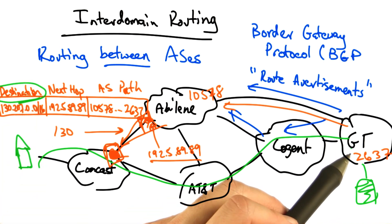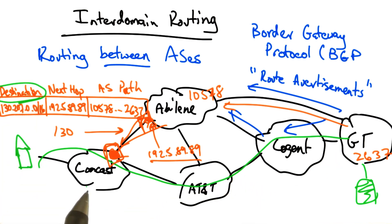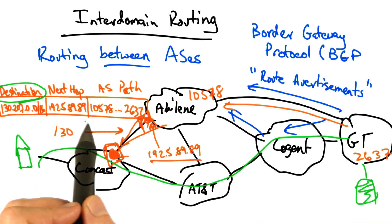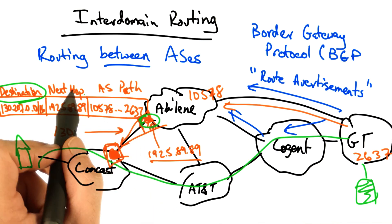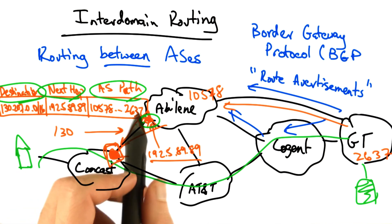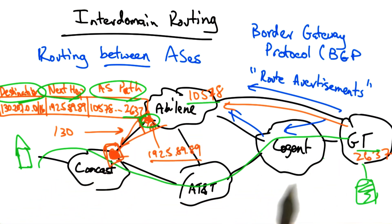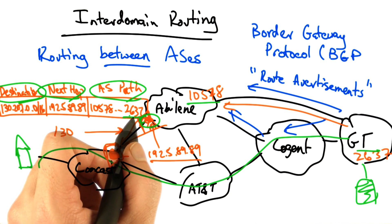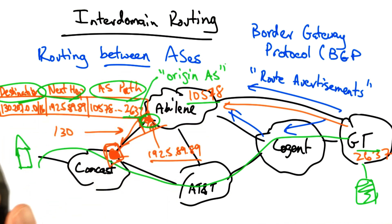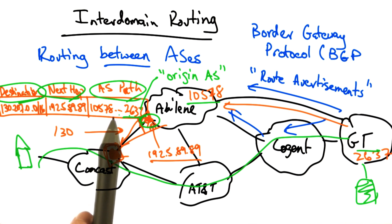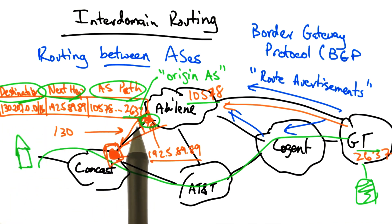So we have the destination IP prefix for the destination that a router might want to send traffic to. The NextHop, which is the IP address for the router for the next hop along the path. And finally, the AS path, which is the sequence of ASs that the route traversed en route to the AS hearing the announcement. The last AS number on the AS path is often called the origin AS, because that is the AS that originated the advertisement for this IP prefix. In this case, the origin AS is 2637, or Georgia Tech.